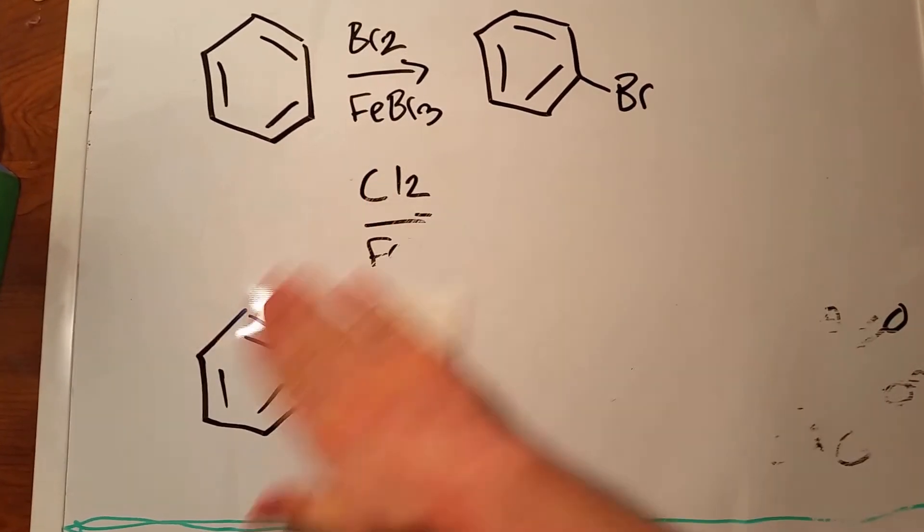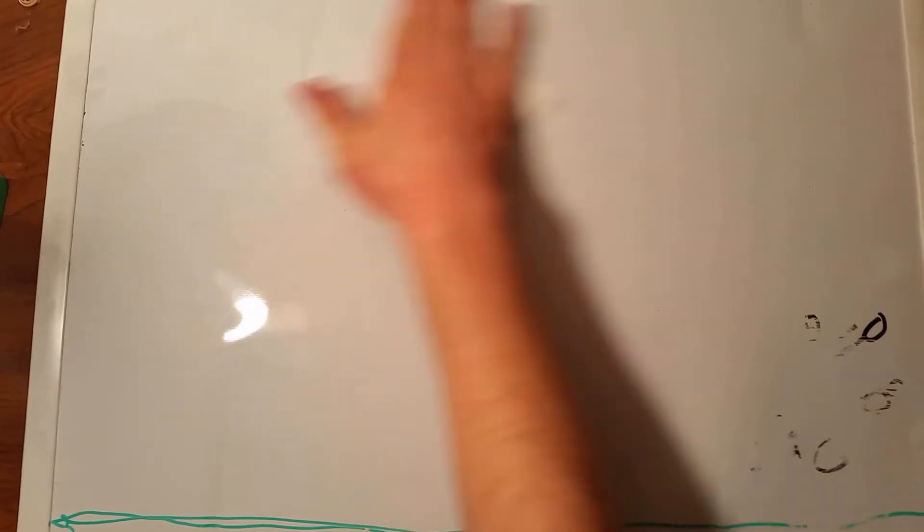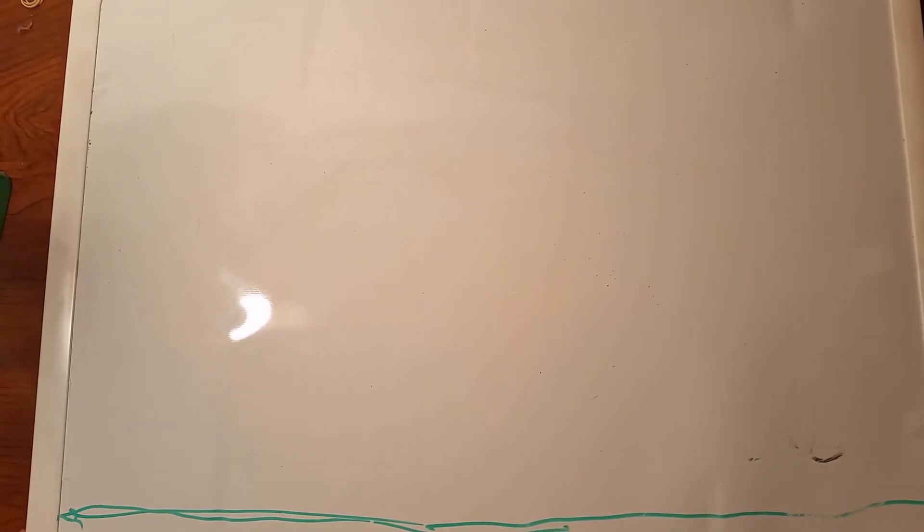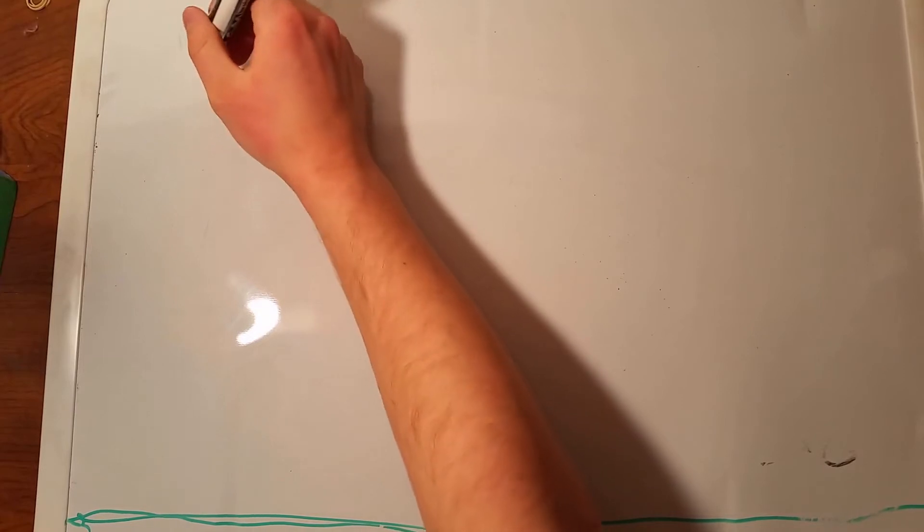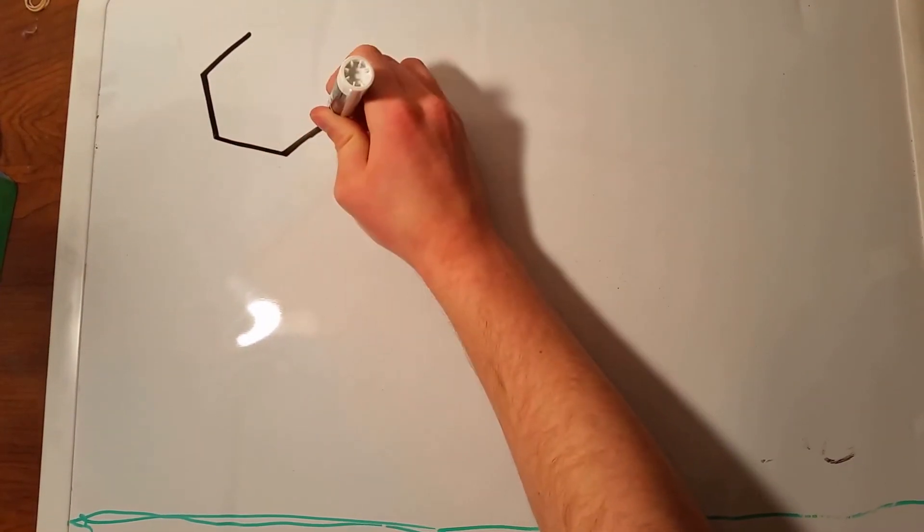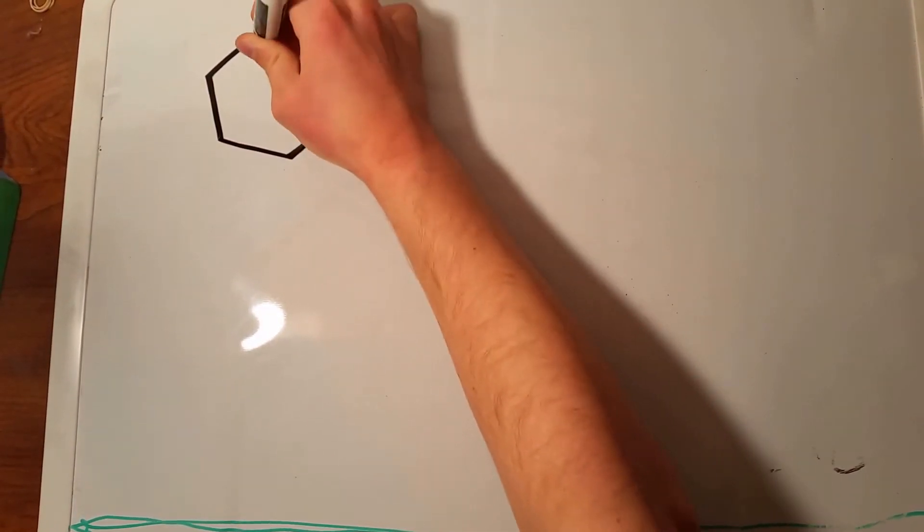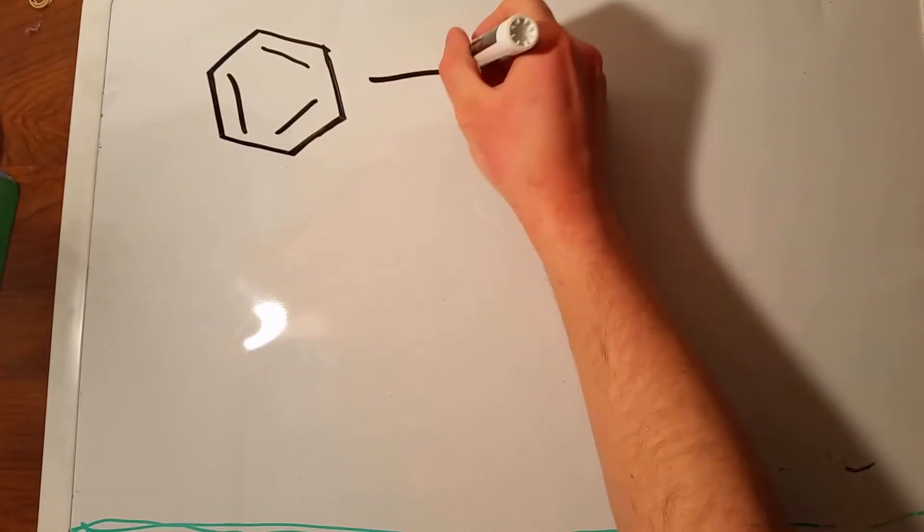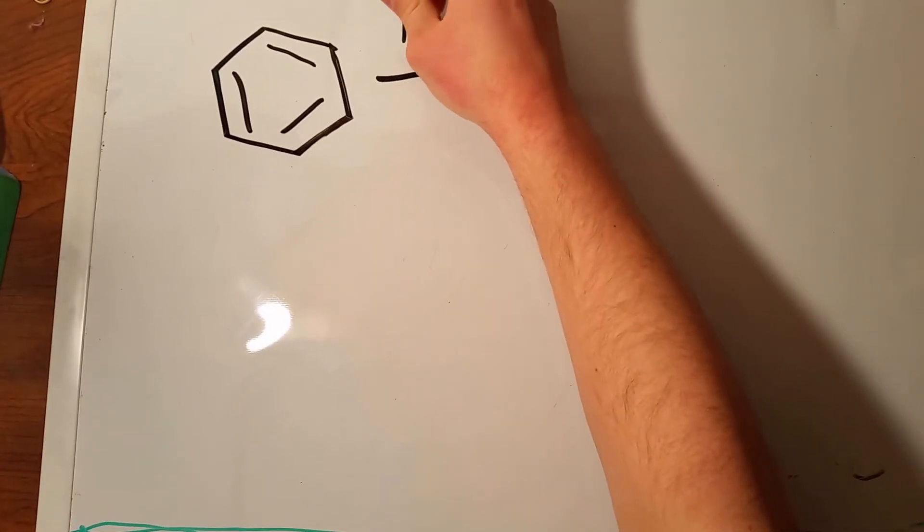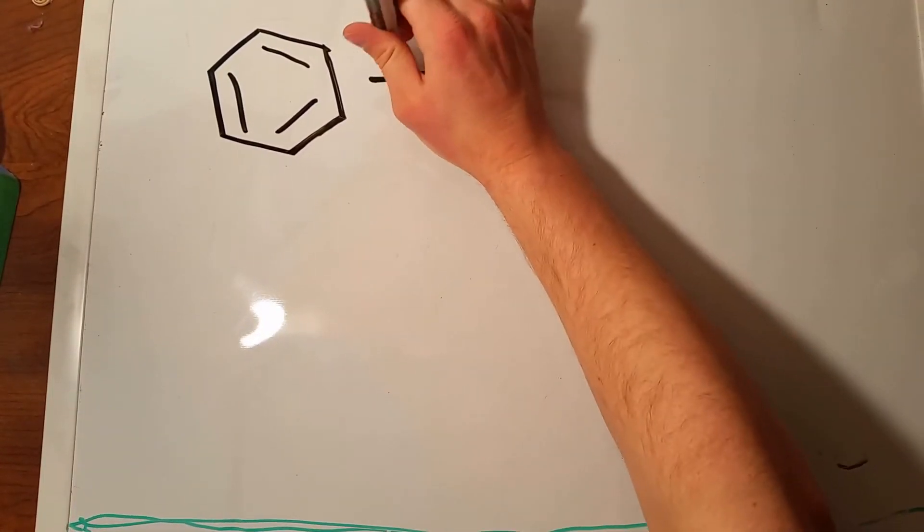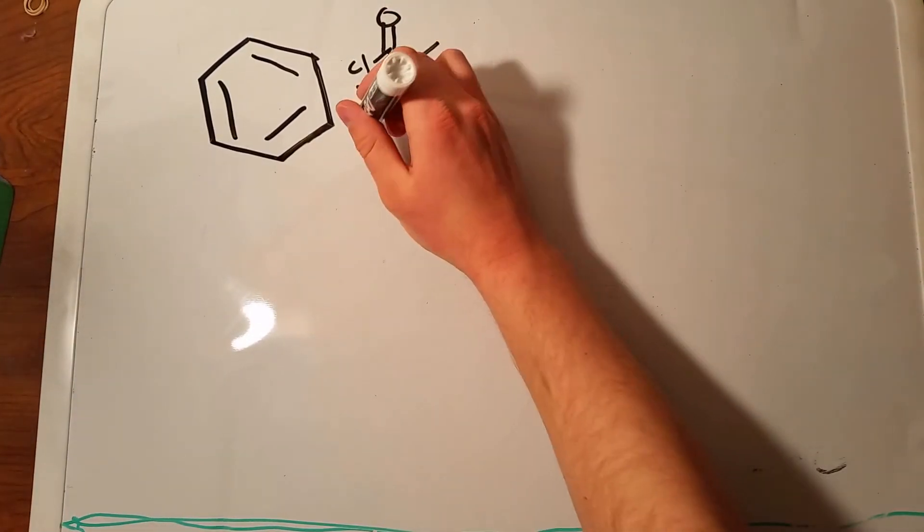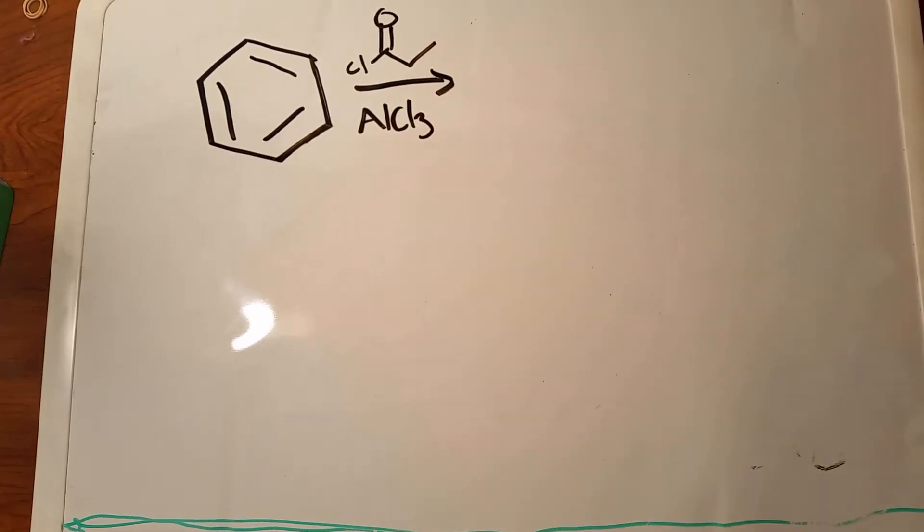The next reactions worth mentioning are going to be our Friedel-Crafts reactions. These two are going to be really important, and pretty much any synthesis you deal with that involves benzene will probably require you to use one of these. Let's start with the easier of the two, because it doesn't involve any extra rules. That is your Friedel-Crafts acylation reaction. Acyl groups are another term for carbonyls, so double bond O's. So let's take this for example, and then we'll have AlCl3 under the arrow.